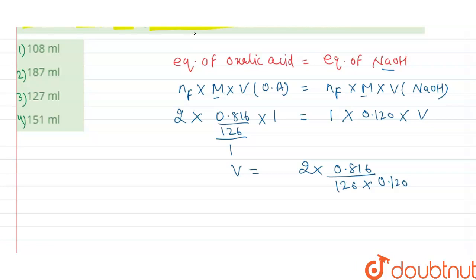So by calculating this value, we get volume equals 0.108 liters. To convert it to milliliters, the volume becomes 108 mL.